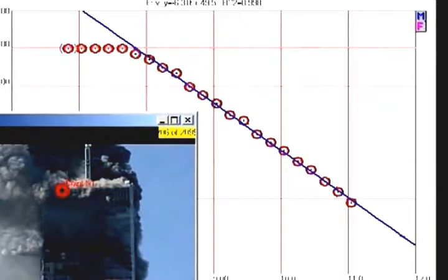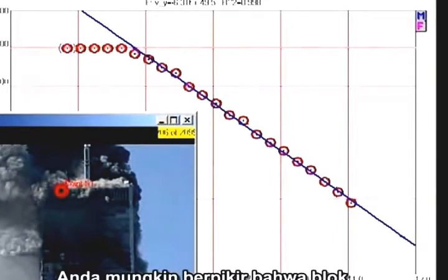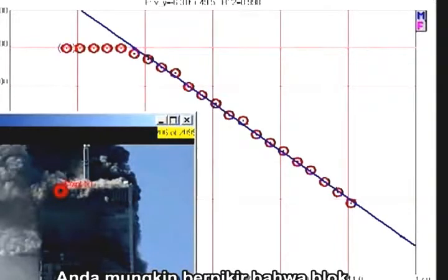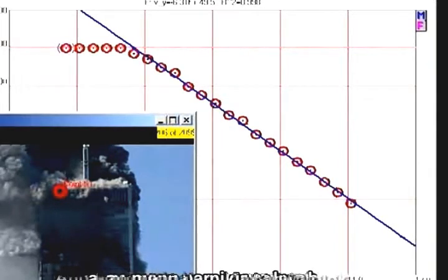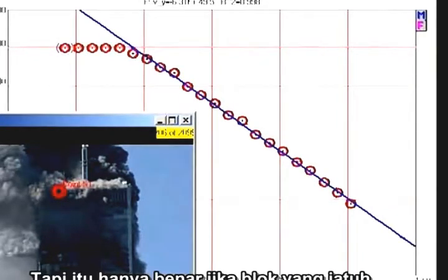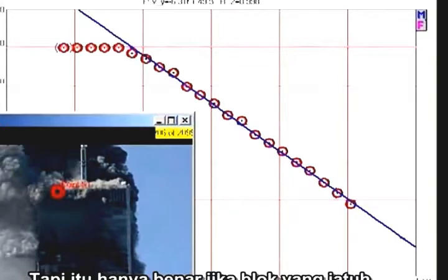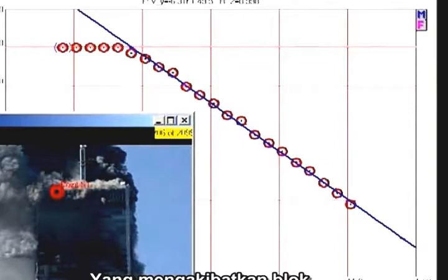This must seem counterintuitive. You might think the upper block coming down into the lower section of the building exerts a greater force than a stationary object. But that is only true if the upper block actually impacts the lower block, which would cause the upper block to decelerate.